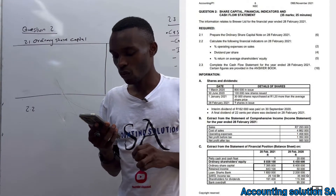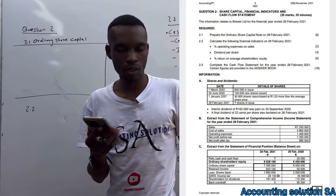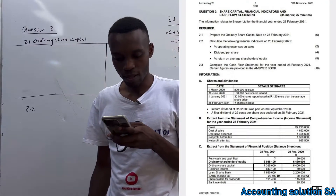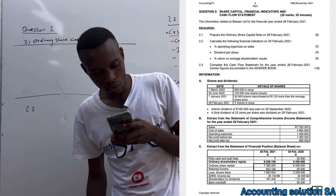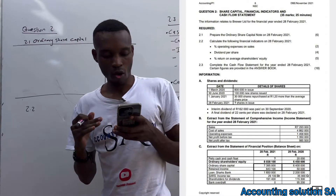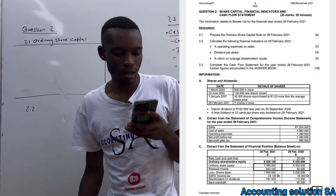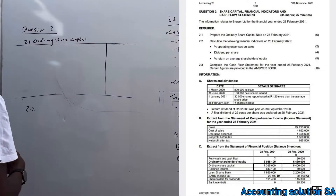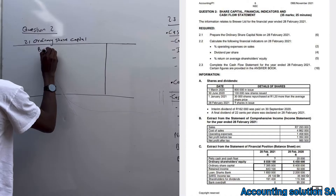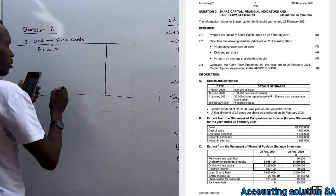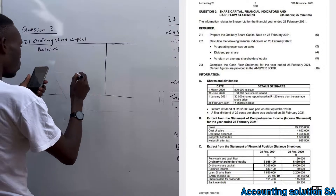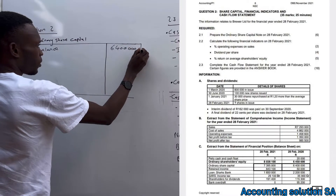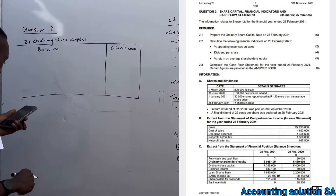Question 2.1 requires us to prepare the ordinary share capital note on 28 February 2021. They give us information on shares issued, new shares, share buyback, but they didn't give us the number of shares at the end. If we check information number C, they give us opening balance and closing balance, so we can start with those. The opening balance was R6,400,000.